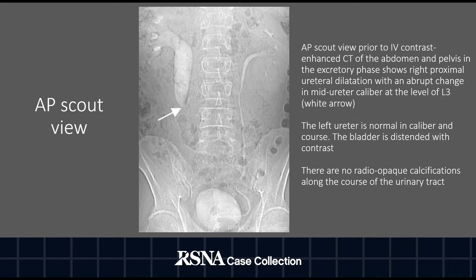AP scout view prior to IV contrast-enhanced CT of the abdomen and pelvis in the excretory phase shows right proximal ureteral dilatation with an abrupt change in mid-ureter caliber at the level of L3, as indicated by the white arrow. The left ureter is normal in caliber and course. The bladder is distended with contrast. There are no radiopaque calcifications along the course of the urinary tract.